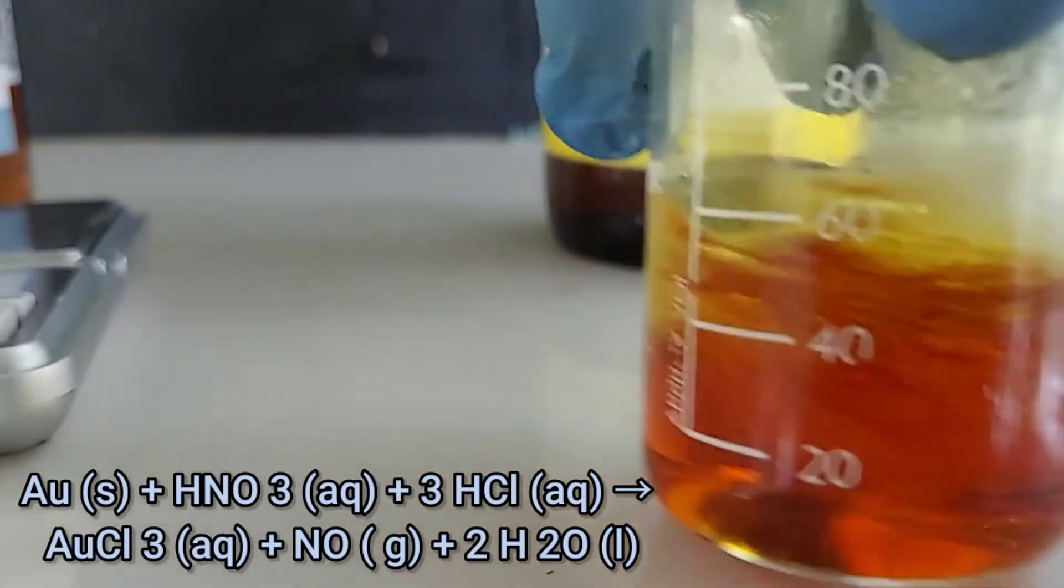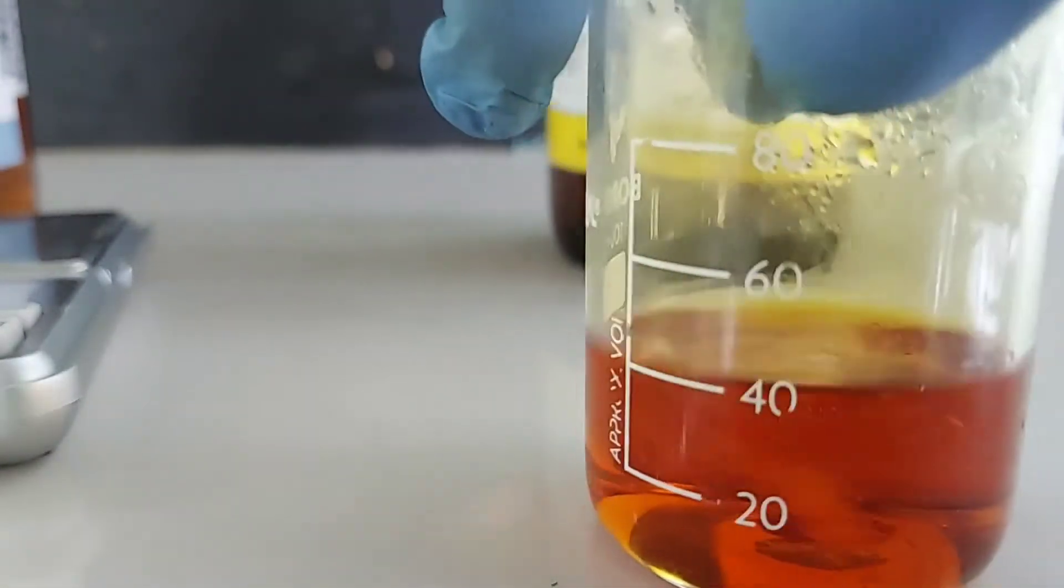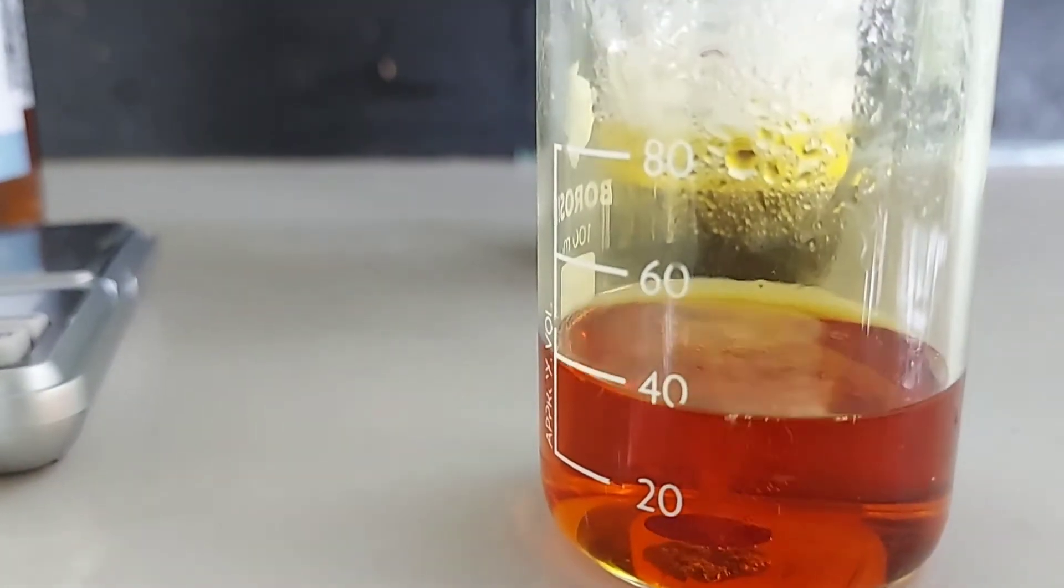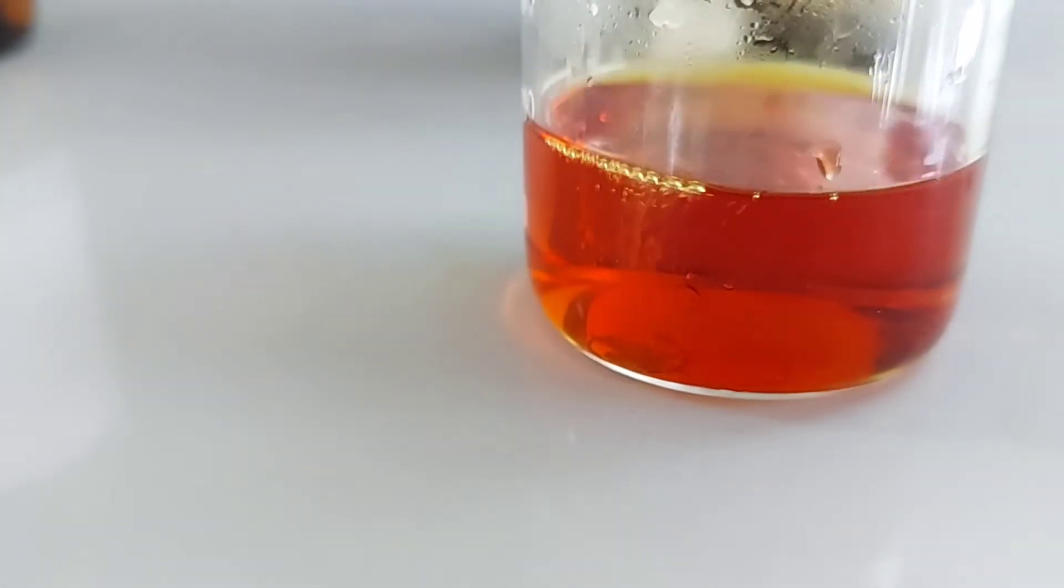But when hydrochloric acid is added into the solution, it will provide chloride ions, Cl- ions. This chloride ion will react with Au3+ and form chloroaurate. And this chloroaurate will dissolve in the solution as chloroauric acid. So we can dissolve gold by adding hydrochloric acid and nitric acid together.